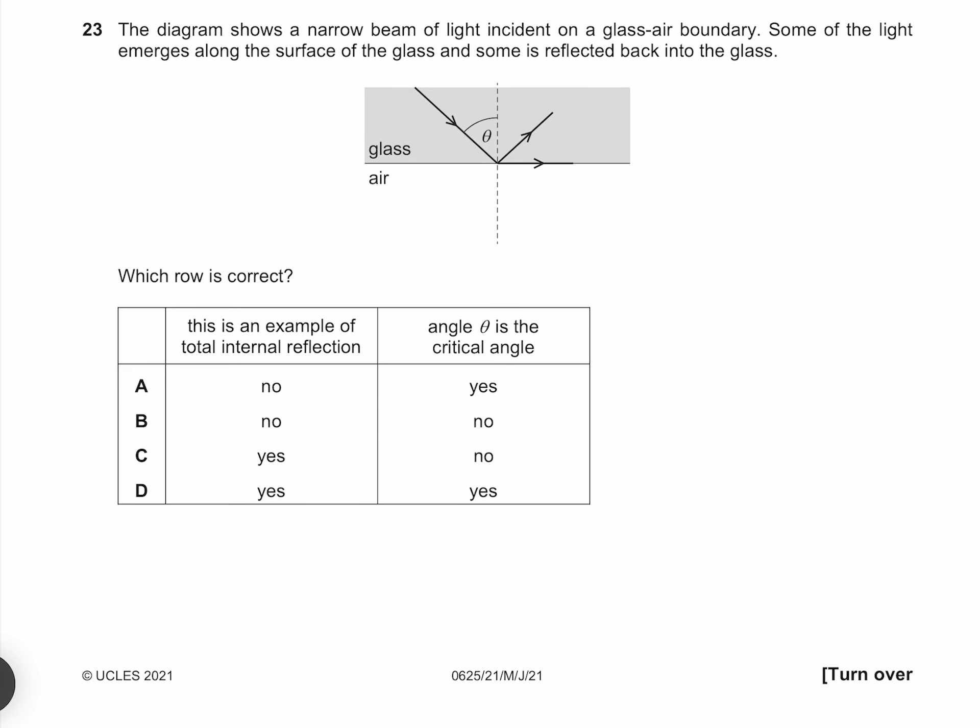The diagram shows a narrow beam of light incident on a glass air boundary. Some of the light emerges along the surface of the glass and some is reflected back into the glass. Which row is correct? This is an example of total internal reflection is not the case, because we still have a refracted ray. Angle theta is the critical angle is true, because our ray is refracting along the boundary. So our answer is A.